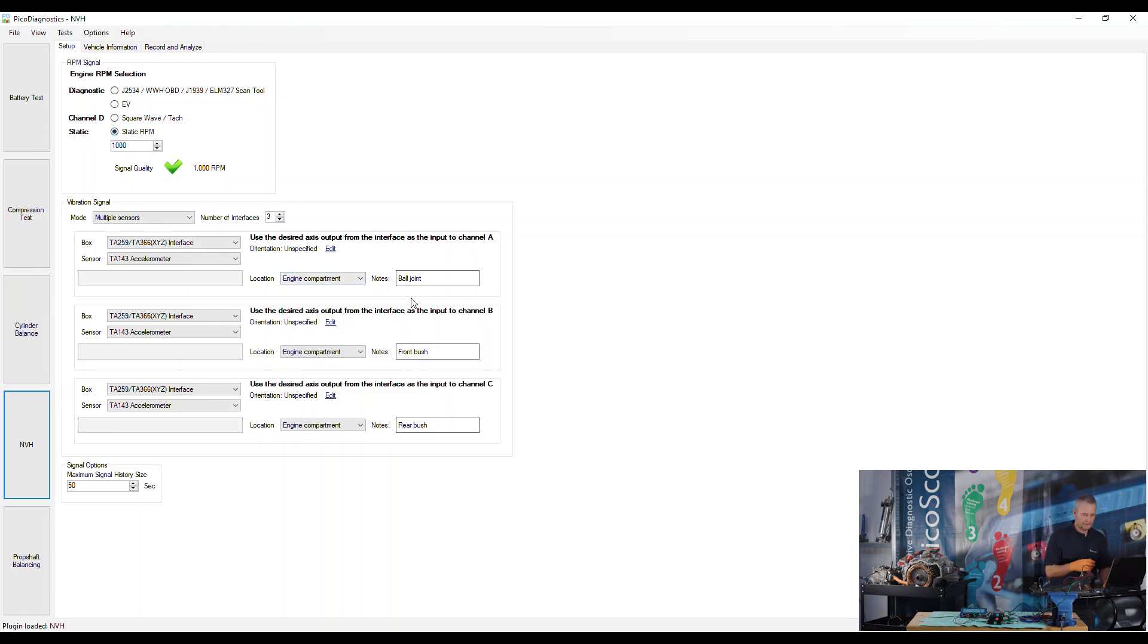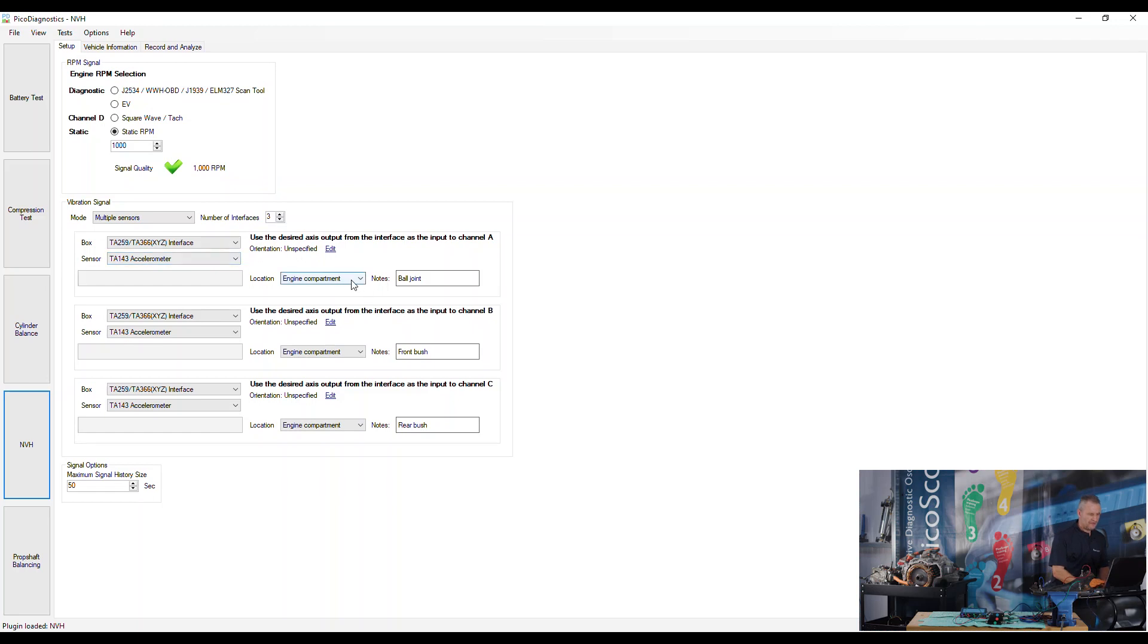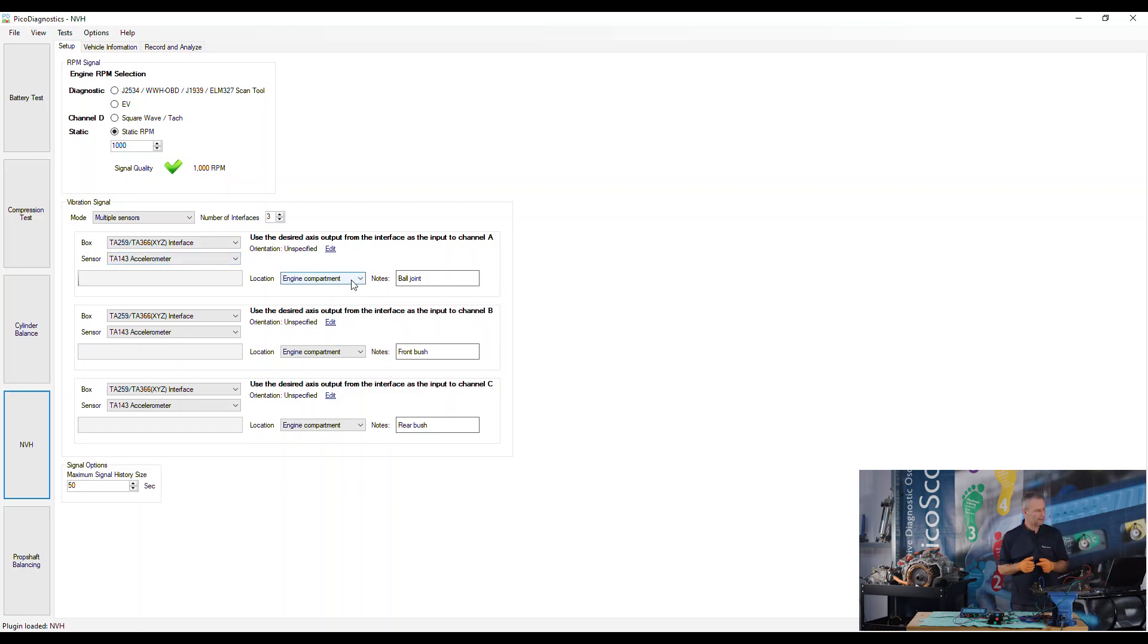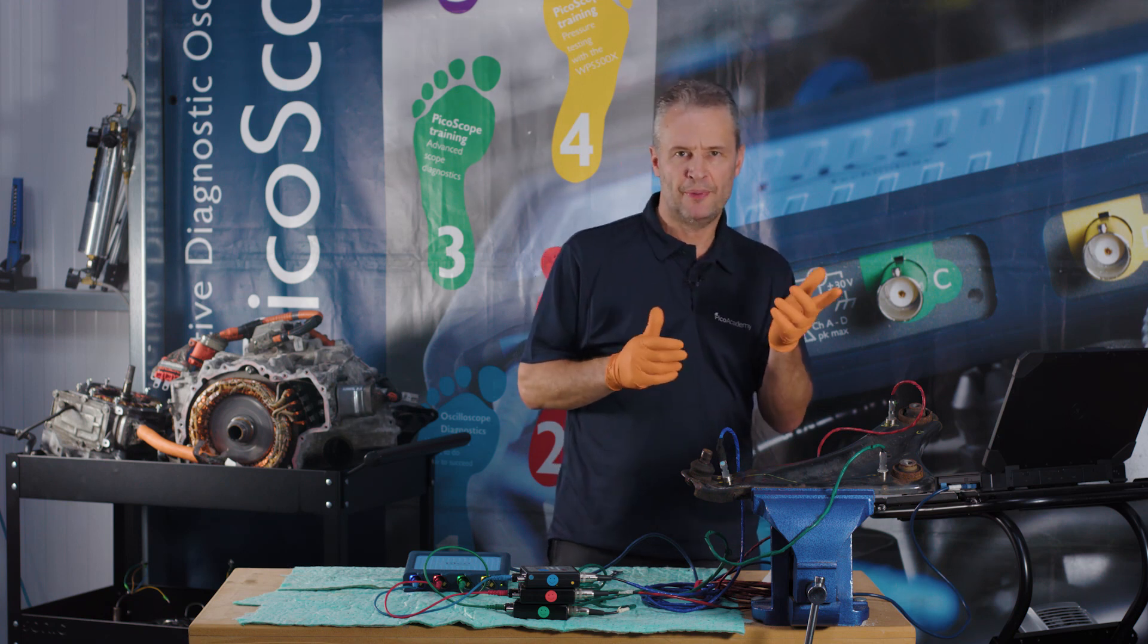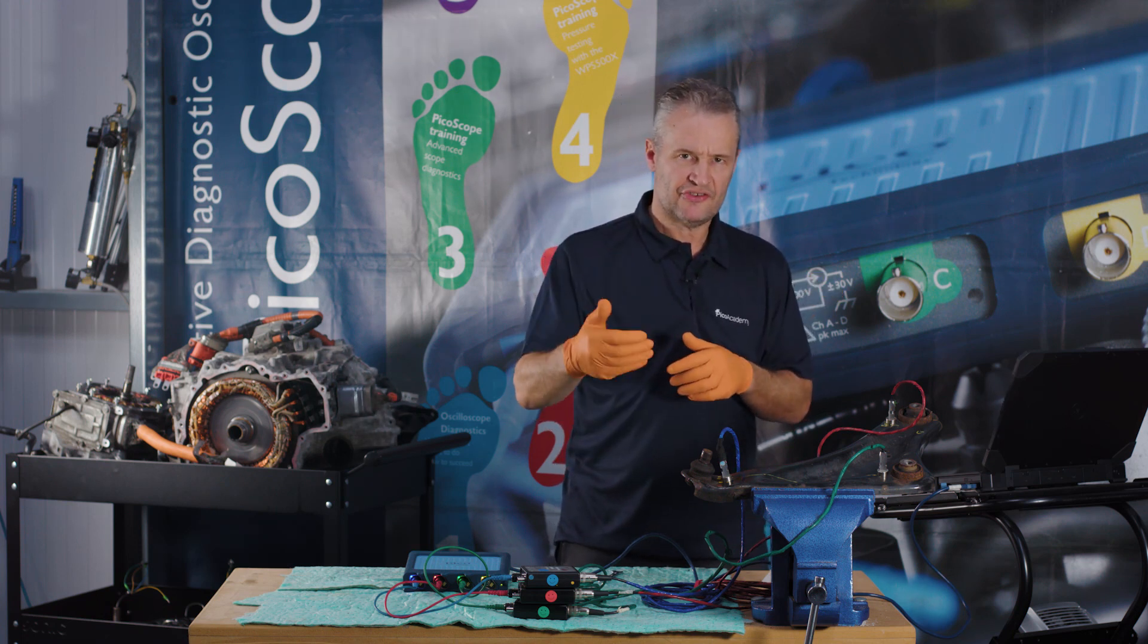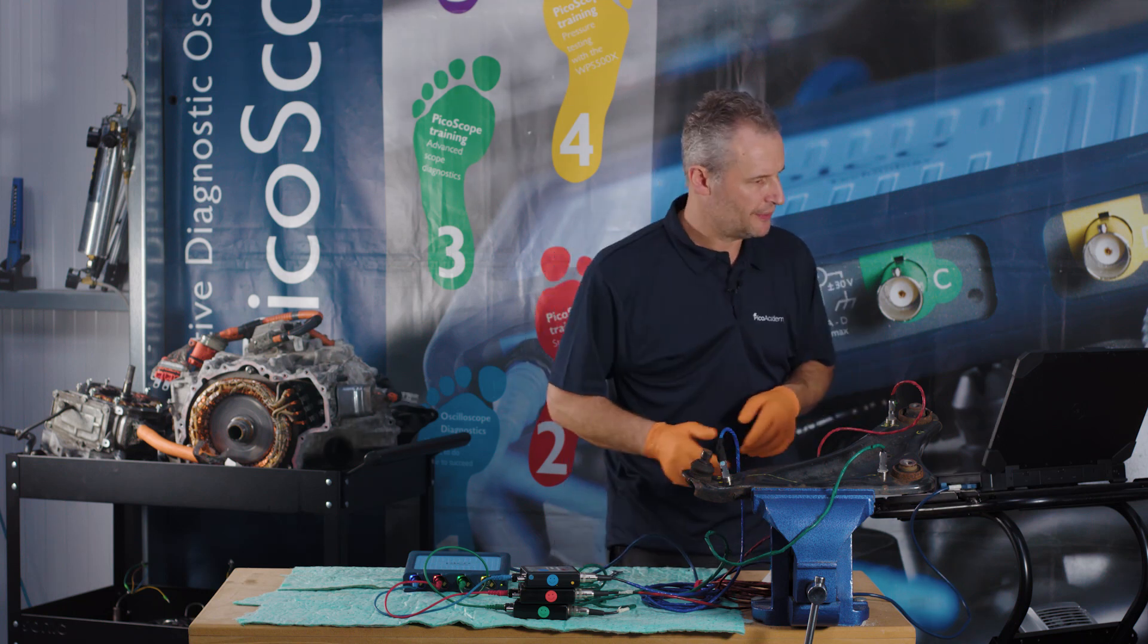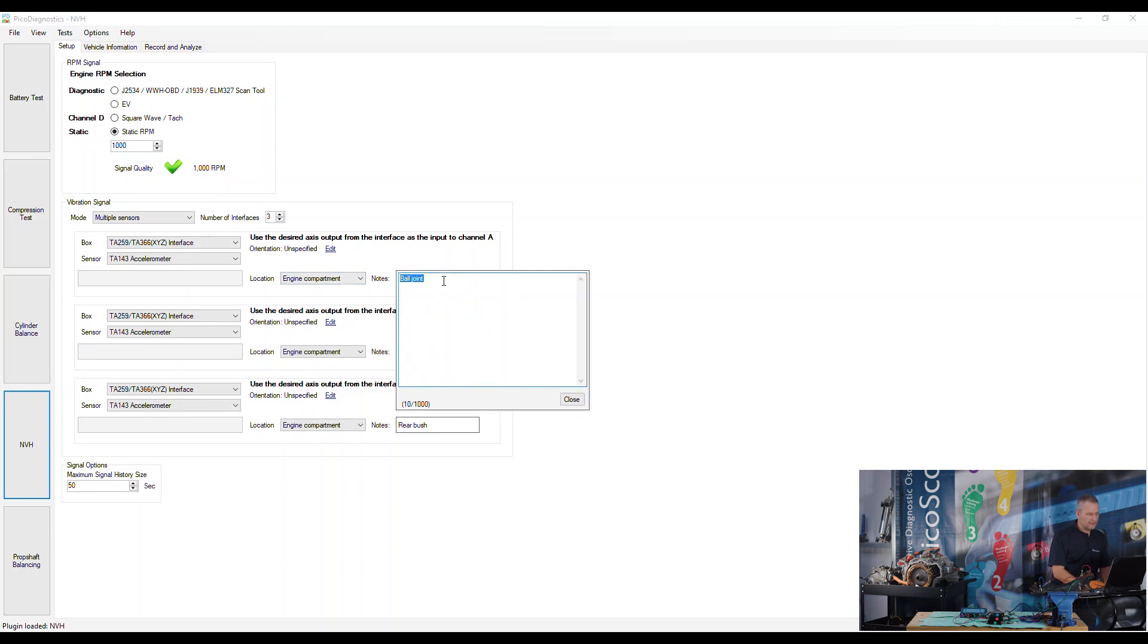It's important that you configure NVH correctly. We've gone for a TA259 interface and TA143 accelerometer, specifying that they are in the engine compartment. Whenever you use NVH, consider anything mounted outside of the vehicle as engine compartment, anything inside as passenger compartment. This is very important.